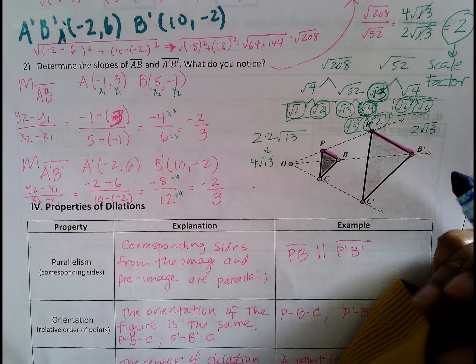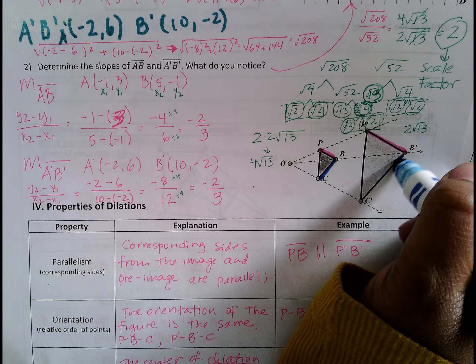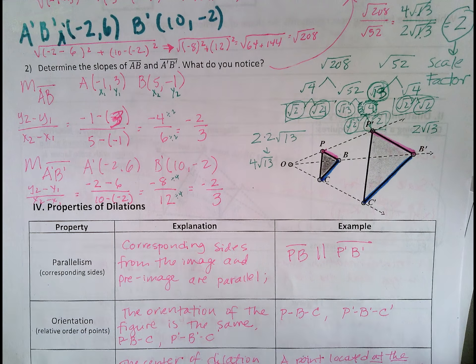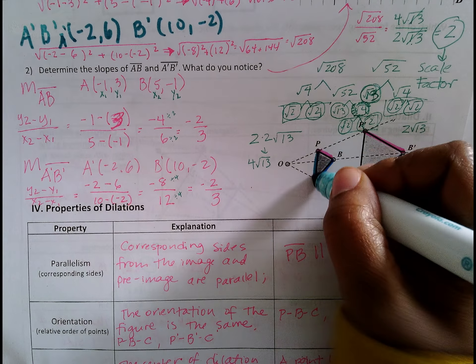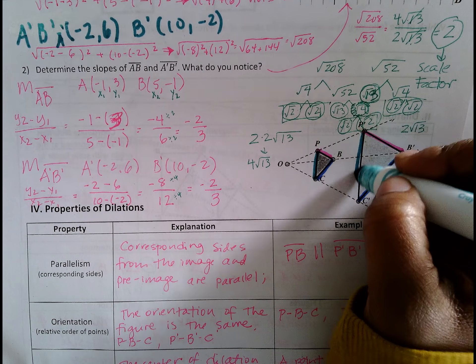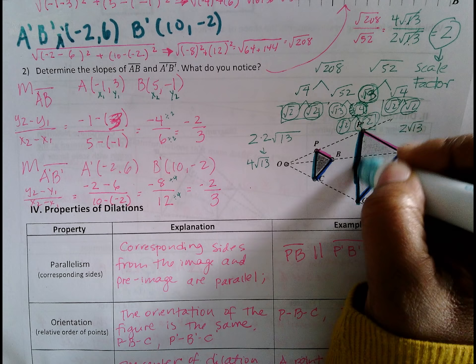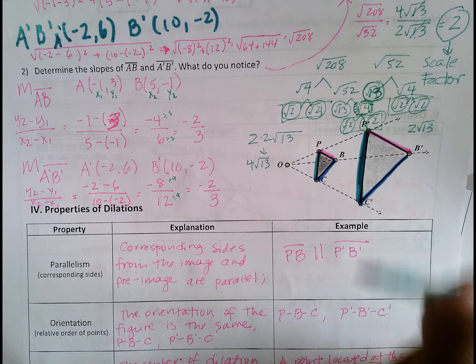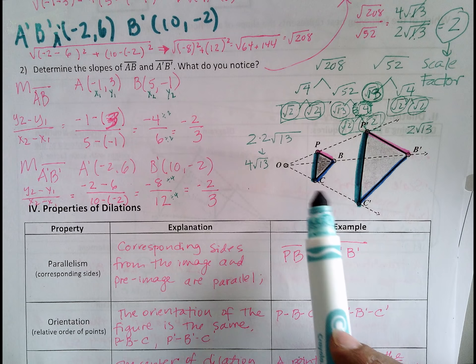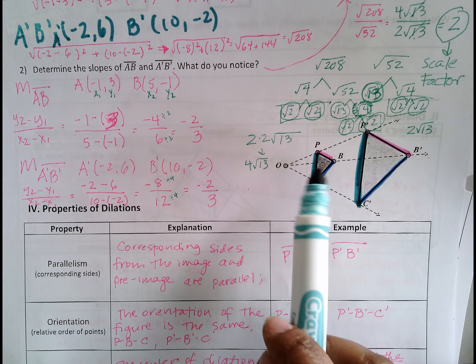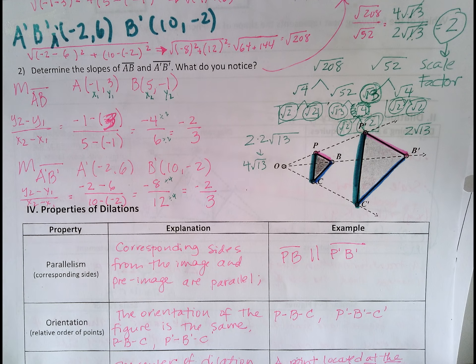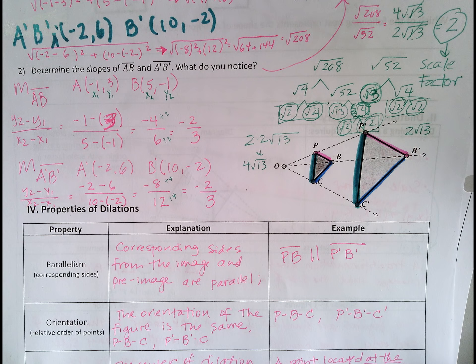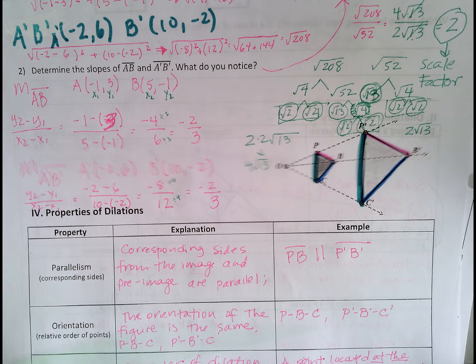And BC corresponds with B'C', because they are also in the same location in the triangle. So what that means is PC is parallel to P'C', PB is parallel to P'B', and CB is parallel to C'B'. They will never intersect ever, and they will always have the same slope. They will always have the same slope in similar figures.